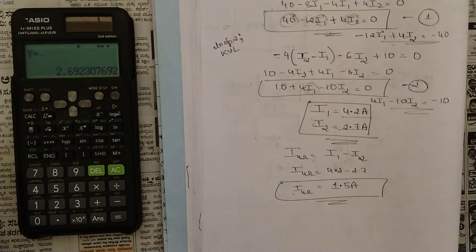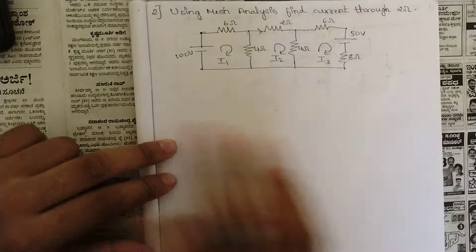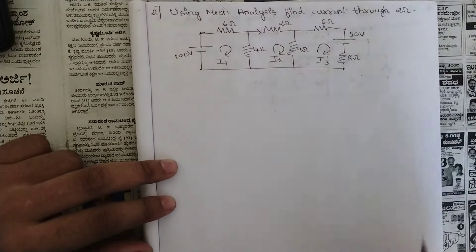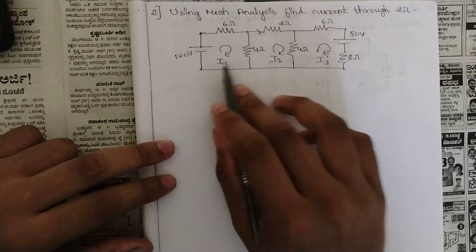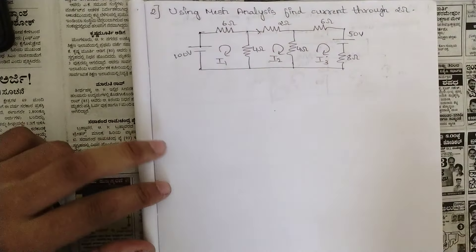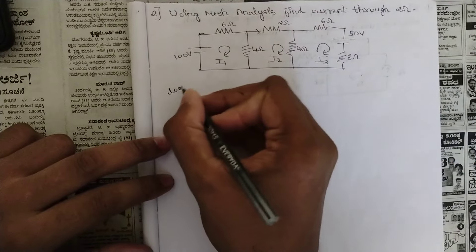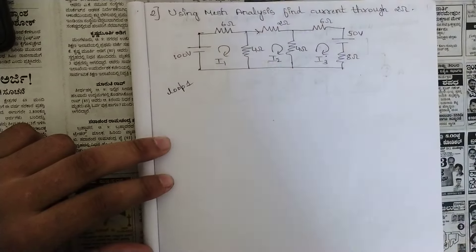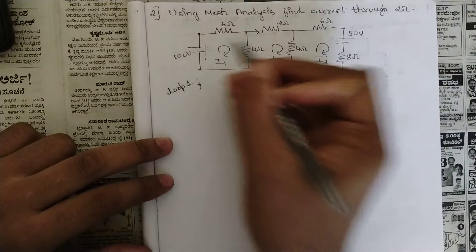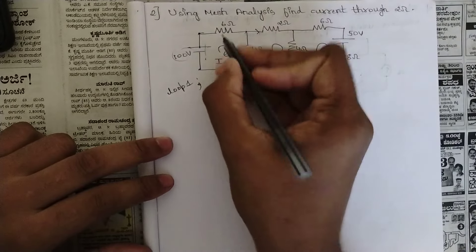Now we have one more problem. This similar kind of problem has three loops: loop I1, loop I2, loop I3. We should solve for three loops — the method is the same. Without wasting time, let's solve. Consider loop 1 first.